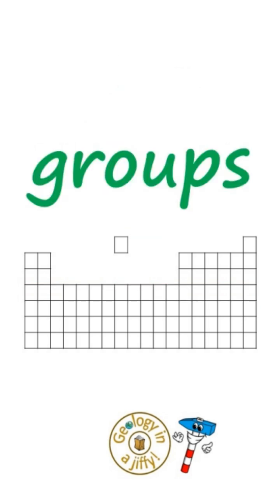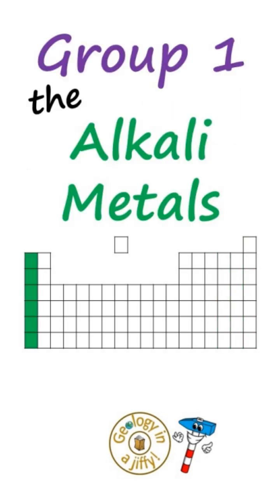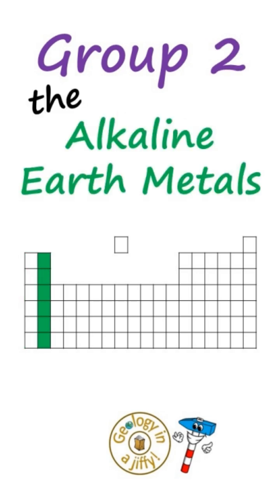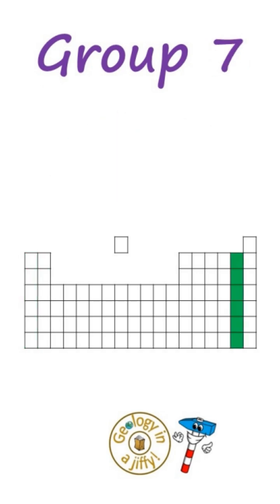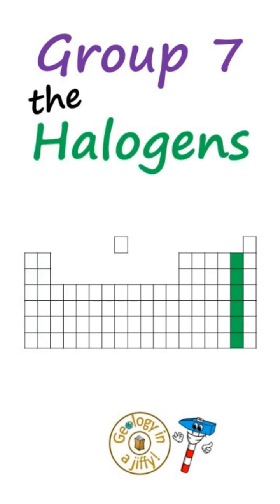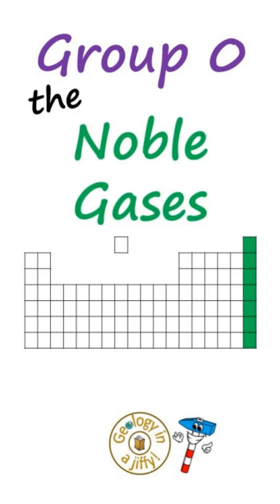The columns are called groups, with groups 1, 2, 3, 4, 5, 6, 7, and 0. Notable groups include group 1 the alkali metals, group 2 the alkaline earth metals, group 7 the halogens, and group 0 the noble gases.